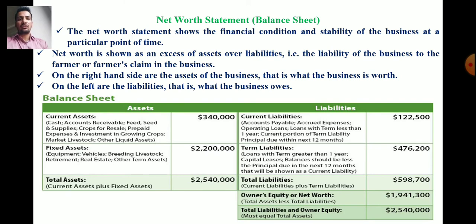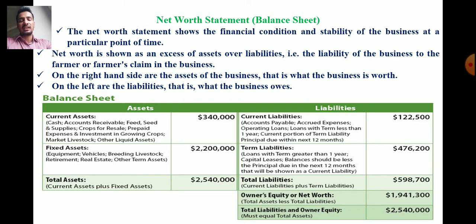Net worth is shown as an excess of assets over liabilities. That is, the liabilities of the business to the farmer, or the farmer's claim in the business.